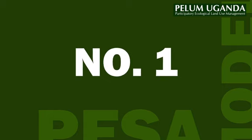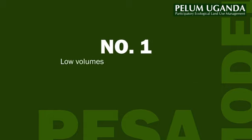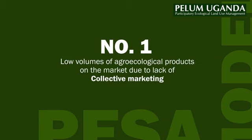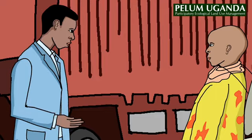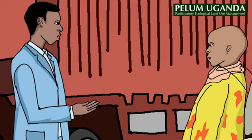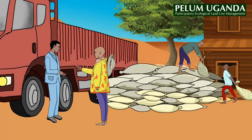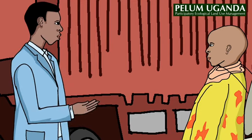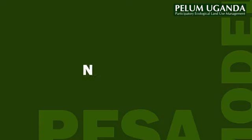The PESA model addresses six marketing challenges farmers commonly face. Number one: low volumes of agroecological products on the market due to lack of collective marketing. To address this challenge and achieve proper marketing, in module one, the PESA model supports farmers in the organization of marketing groups. By doing so, the model strengthens leadership and governance processes.